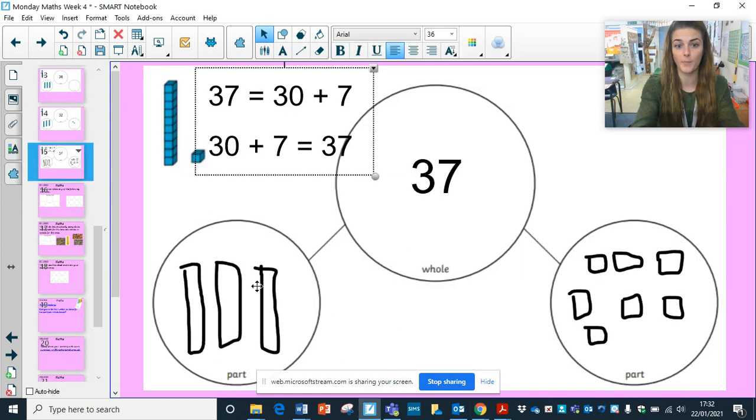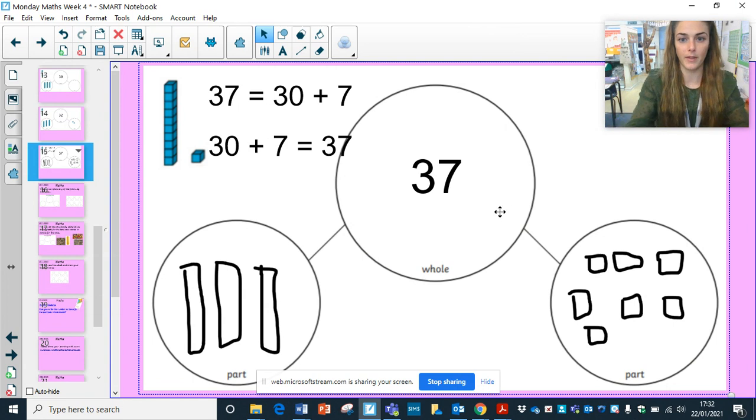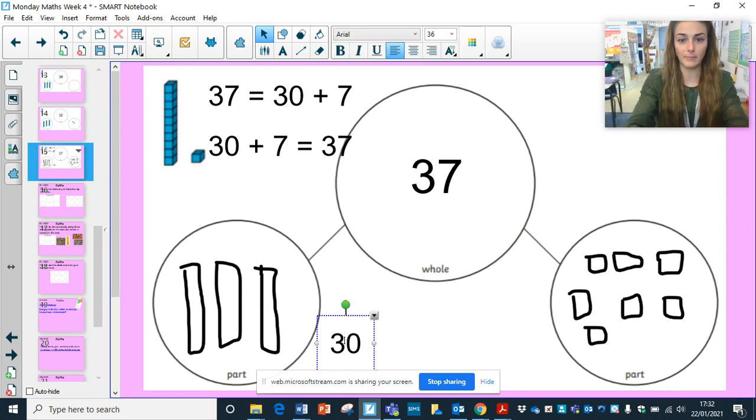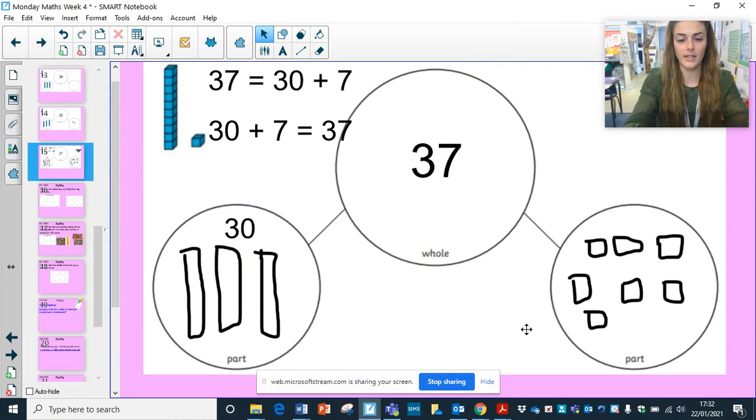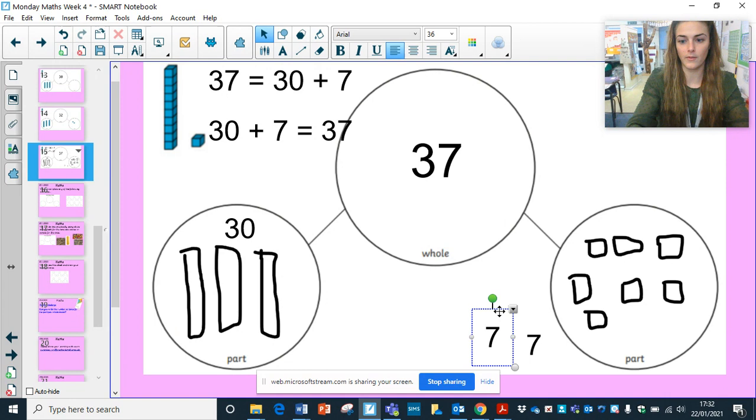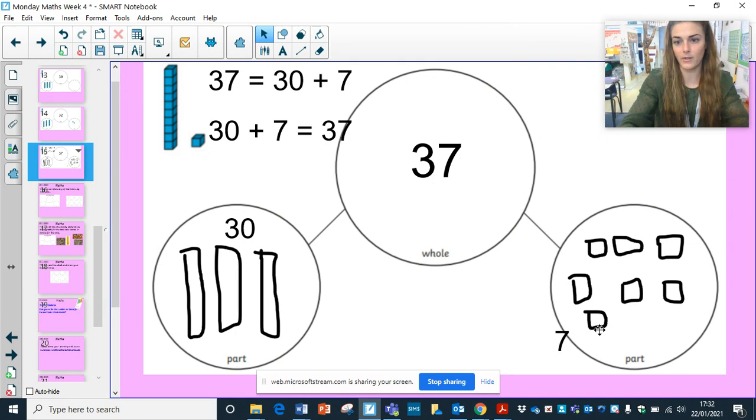So you might write the numbers instead of representing it in this way. So you might write in your part-part-whole the number 37 and 30 in here and then your number seven. And then you might put your number seven over here.